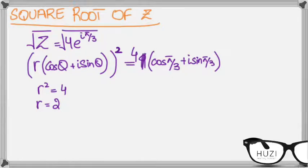So this means that r of the square root is 2, and this means that 2 theta equals to pi by 3. But I'll also add a factor, 2k pi.